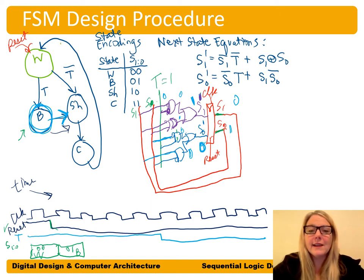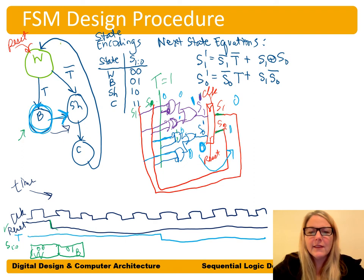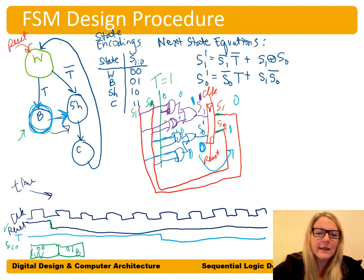Now in the 10 (SH) state: we expect the next state to be 11 (class state), independent of any inputs. With S1=1, S0=0: S1 prime gets 1_bar = 0 on the top gate, then S1 XOR S0 = 1 XOR 0 = 1, so 0 OR 1 means S1 prime = 1.